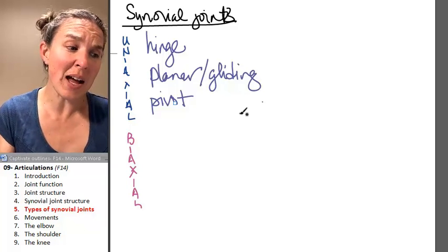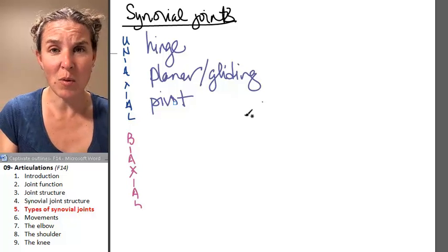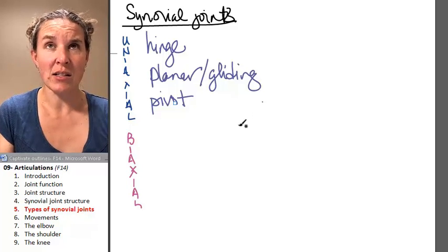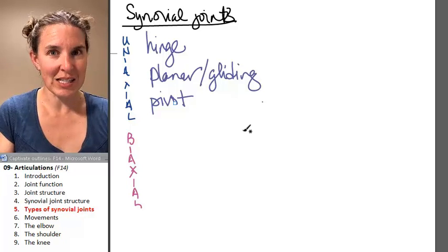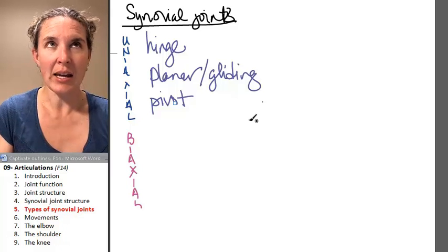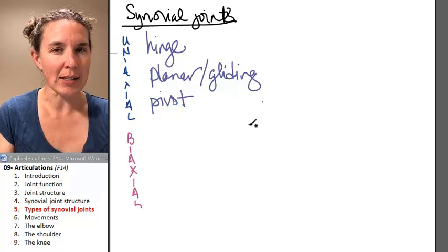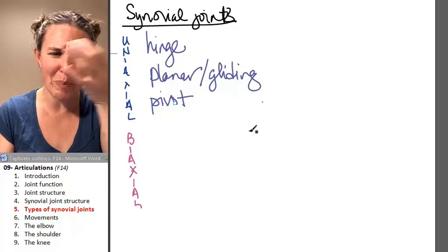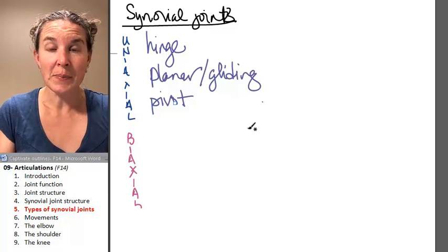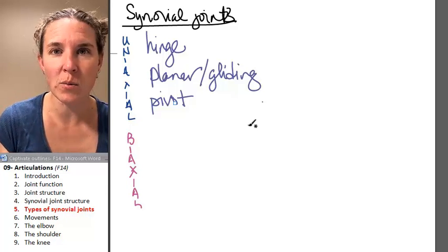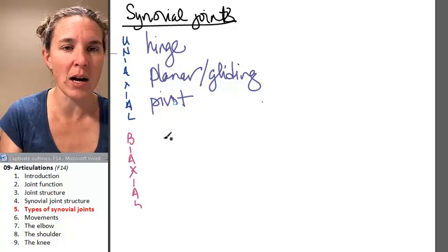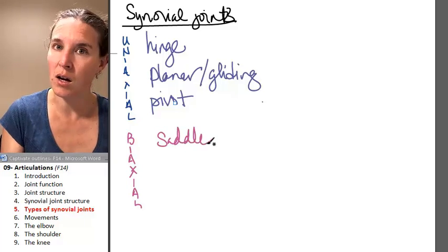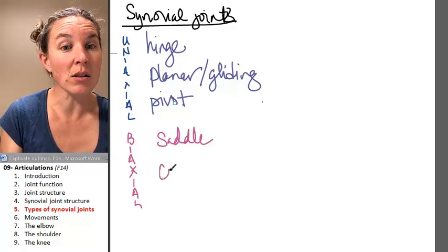And both of my biaxial joints kind of make me want to cry. Like I can imagine a uniaxial joint allowing movement in a single plane. I can imagine a multiaxial joint allowing movement in many planes. But this whole biaxial phenomenon, like what? Really? But I'm going to tell you what kind they are. You have the saddle joint and you have the condylar joint.